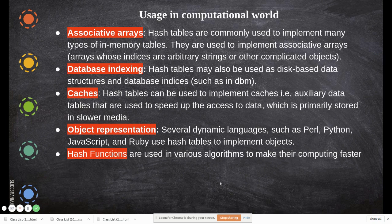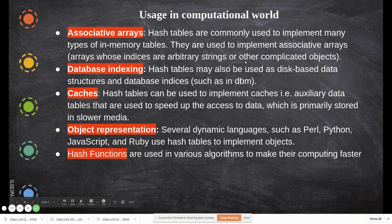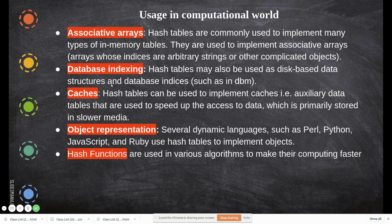In the computational world, hash tables are used via associative arrays where key-value pairs are used to store and access data. Hash tables are commonly used to implement many types of in-memory tables: associative arrays, database indexing for fast data access, and cache memory, where frequently referenced items are stored. Hash tables can implement caches — auxiliary data tables used to speed up data access — which improves execution speed.